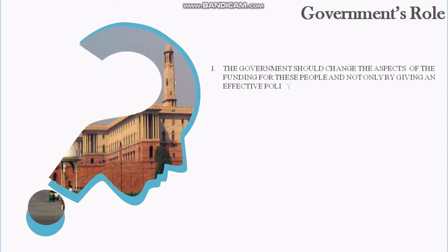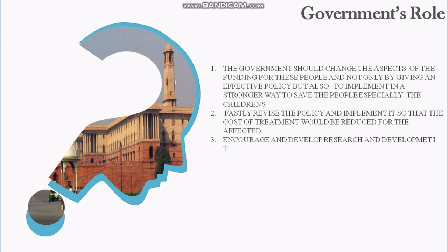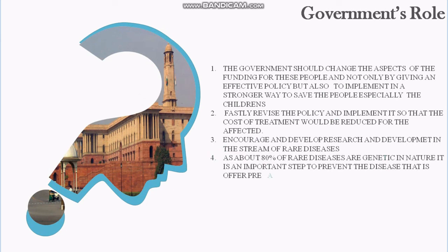Government's role: The government should change the aspects of funding for these people, not only by giving an effective policy but also implementing it in a stronger way to save the people, especially children. The policy should be revised and implemented swiftly so that the cost of treatment is reduced for the affected. Research and development in rare diseases should be encouraged, and since about 80% of rare diseases are genetic in nature, prenatal screening tests should be offered to families with the disease or with the carrier trait.